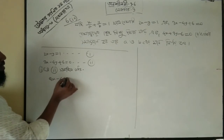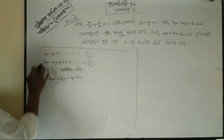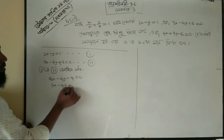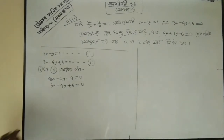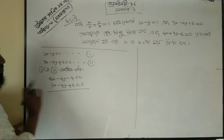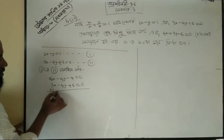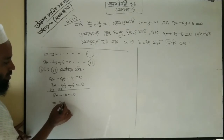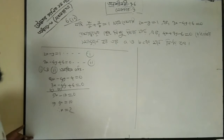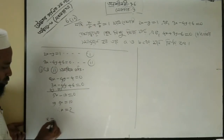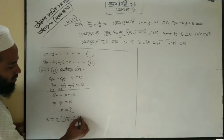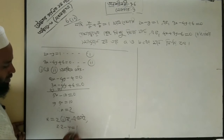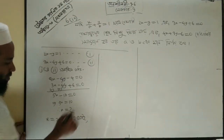We have 2x minus 4y minus 4 equals 0, so 4x minus 4y minus 4 equals 0. Simplifying: minus 8 plus something, minus 10 equals 0. So 5x equals 10, therefore x equals 2.